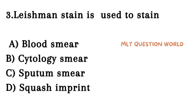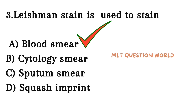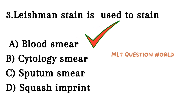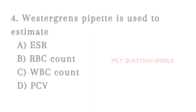Next question. Leishman stain is used to stain: Option A. Blood smear, Option B. Cytology smear, Option C. Sputum smear, Option D. Squash imprint. Leishman stain is a Romanowski stain, and the right answer is Option A — Blood smear.